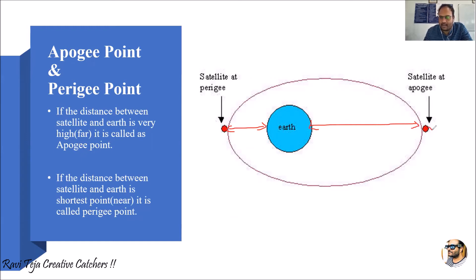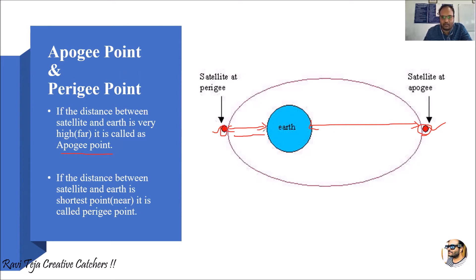This satellite is far away from the earth and this satellite is very very near to the earth. If the distance between a satellite and the earth is high — if any satellite is far away from the earth — that particular point is considered as the apogee point. If the distance between a satellite and the earth is very very short, that particular point is considered as the perigee point.